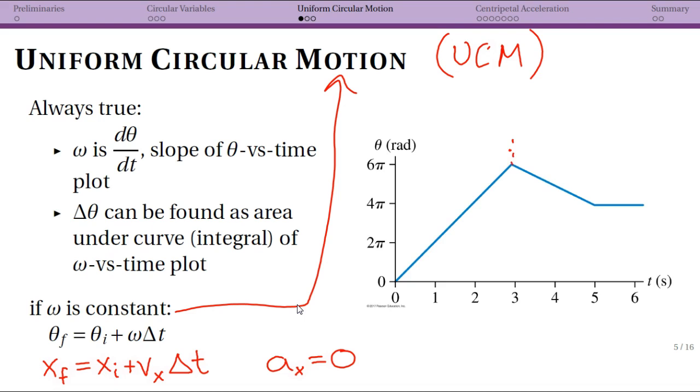You can break this up into pieces. Our first angular speed is given by this slope - a certain Δθ corresponding to a Δt. We then have a different constant ω in this region, and finally this region has ω = 0 because the angle isn't changing. The equation is valid in each region, but you can't necessarily use it for the whole thing.